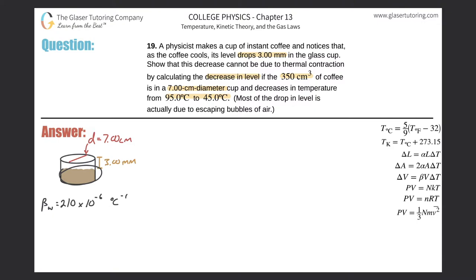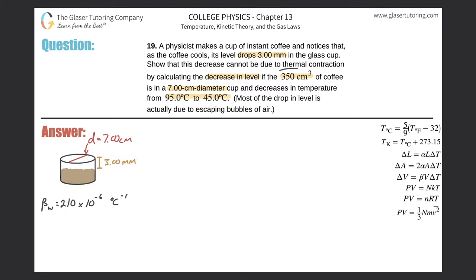We need to calculate the change in volume of this coffee. Originally the coffee is at one level, then it dropped three millimeters as mentioned in the question. We need unit consistency, so let's convert to centimeters since the volume is in cubic centimeters. Dividing 3mm by 10 gives us 0.3 centimeters — that's how much it decreases.